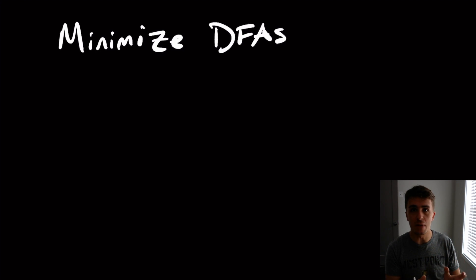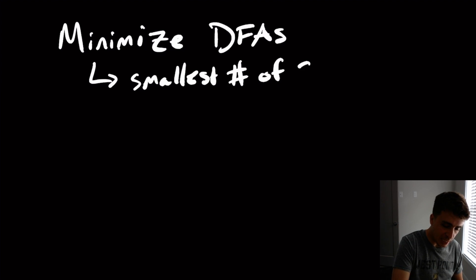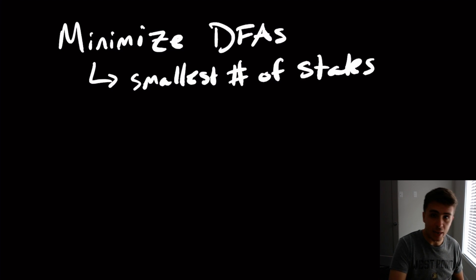So if I have a particular DFA and I can somehow find a smaller DFA for it, then there is a way to do that and it's sufficient. So here, what do we mean by minimizing DFAs? We mean the smallest number of states that recognizes the exact same language as before.